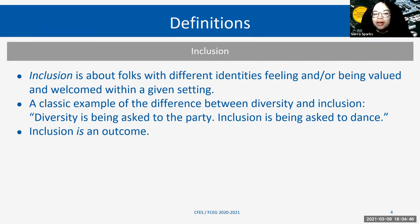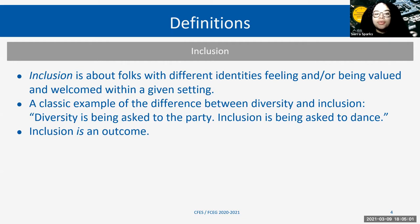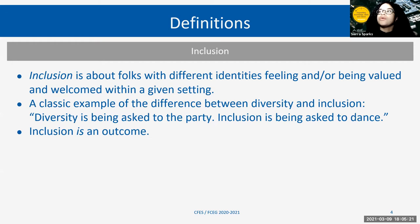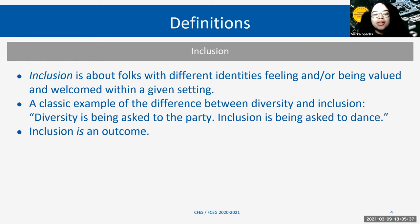Inclusion is probably the next best understood of the three terms. Inclusion is essentially about individuals with different identities feeling and/or being valued and welcome within a given setting. Diversity is that people are there and they're part of a group, but inclusion is really making those individuals feel like they're welcome and meant to be there — not just there to fill a diversity target. A classic example: diversity is being asked to the party, but inclusion is being asked to dance.